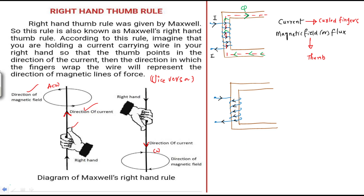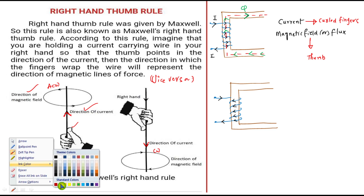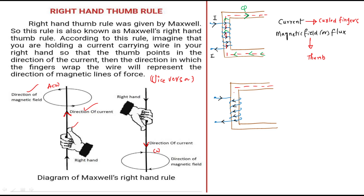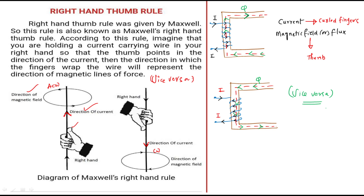Coming to the second case, what about the magnetic flux? We have current — the same amount of current is leaving from this terminal. The curled fingers represent the direction of current, and the flux direction follows accordingly. If the curled fingers represent flux, obviously the thumb represents current. If the thumb represents flux, the curled fingers represent the direction of current. This is about the concept of right hand thumb rule.